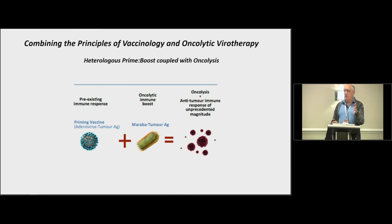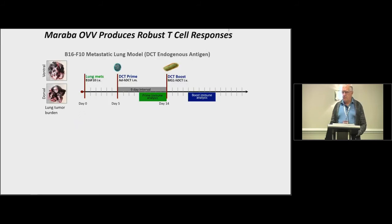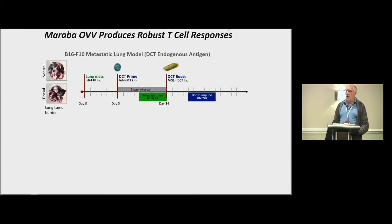We wanted to combine the oncolytic virus concept with the well-established vaccinology concept of a heterologous prime-boost. The problem when using viruses as therapeutics is they're very immunogenic themselves — we want to keep the immune system from focusing on the virus and instead focus on the tumor. So we encode a tumor antigen in a priming vaccine, in this case a non-replicating adenovirus vector, and use the same tumor antigen in the Maraba virus, which will replicate. Because it's a heterologous prime-boost with two different vectors, the immune system sees the tumor antigen twice but only sees each virus once. Our goal is good oncolysis, heating up the tumor, and a potent immune response.